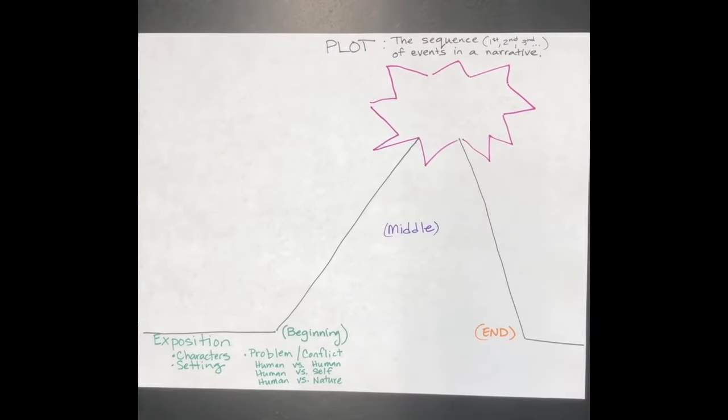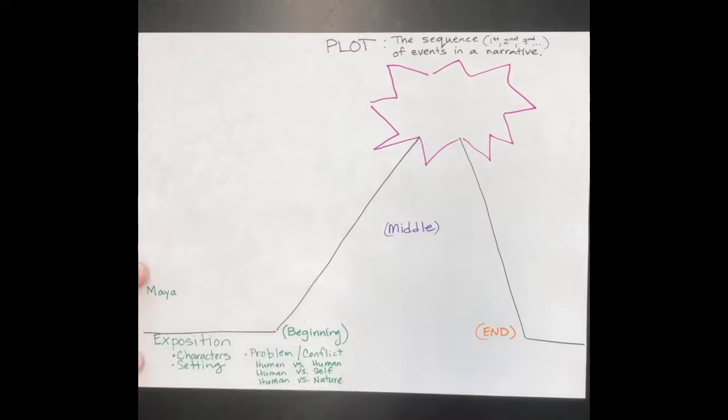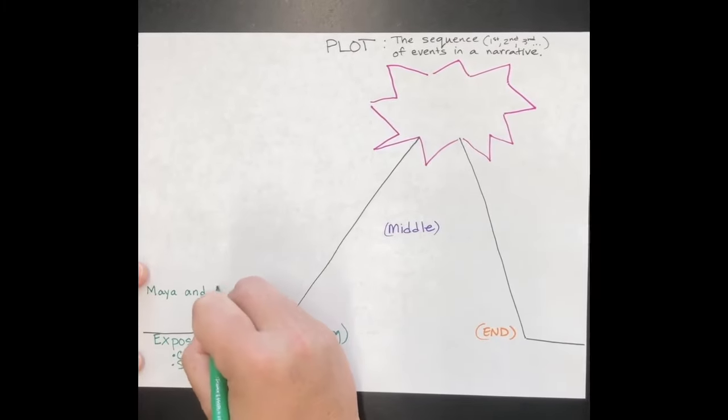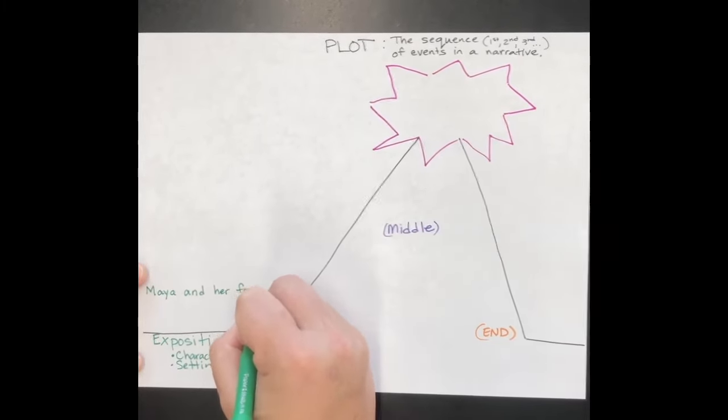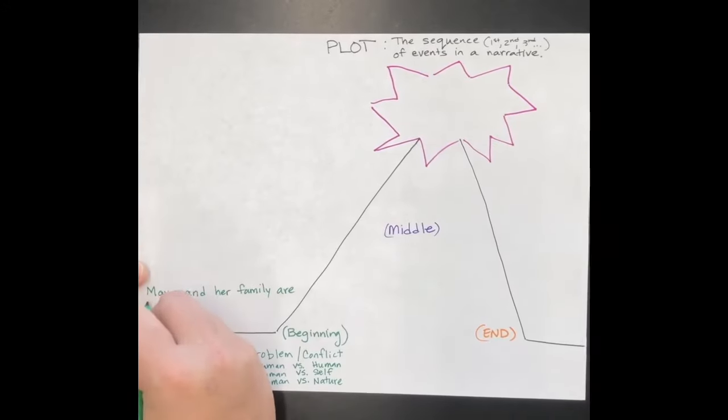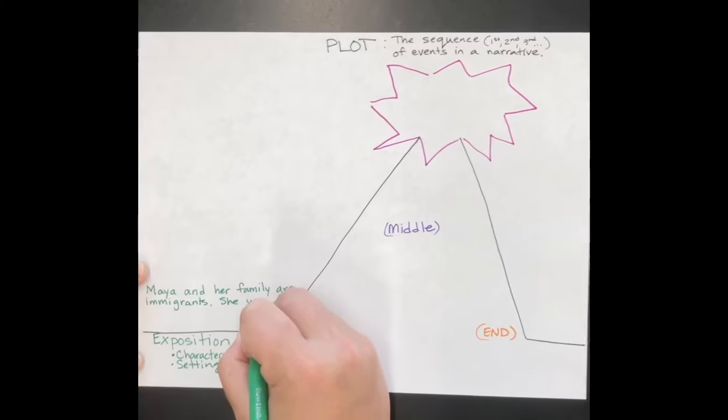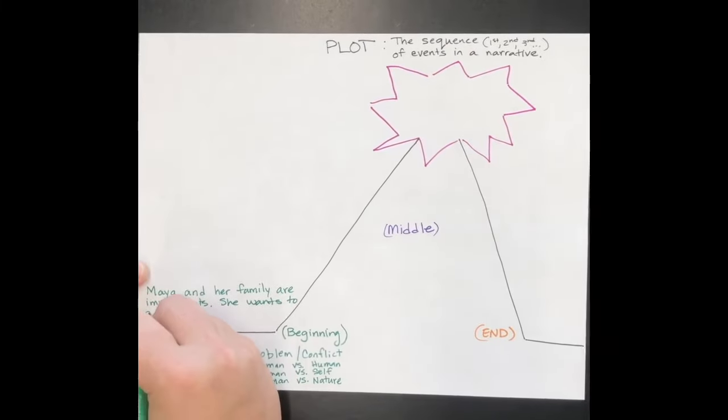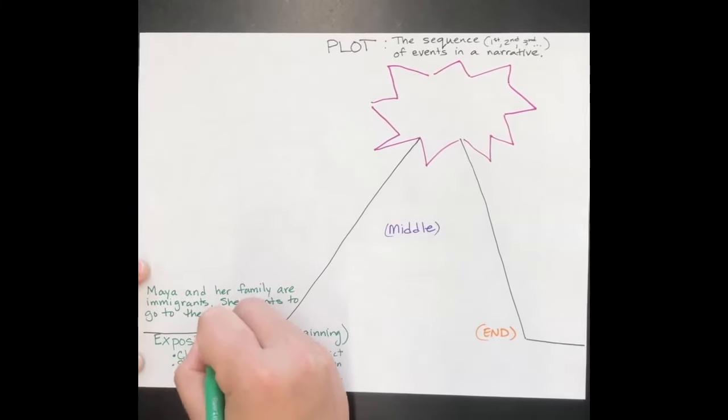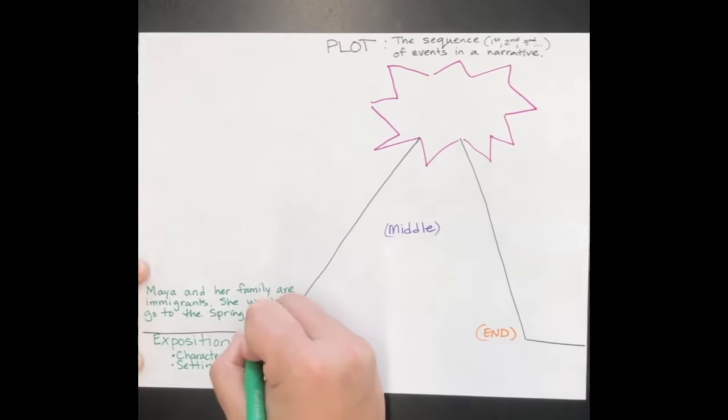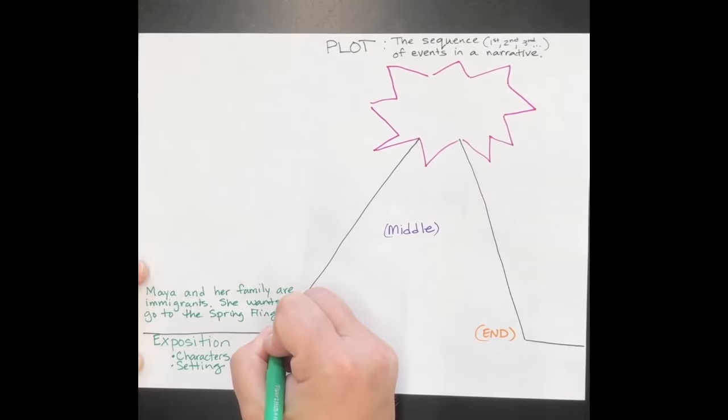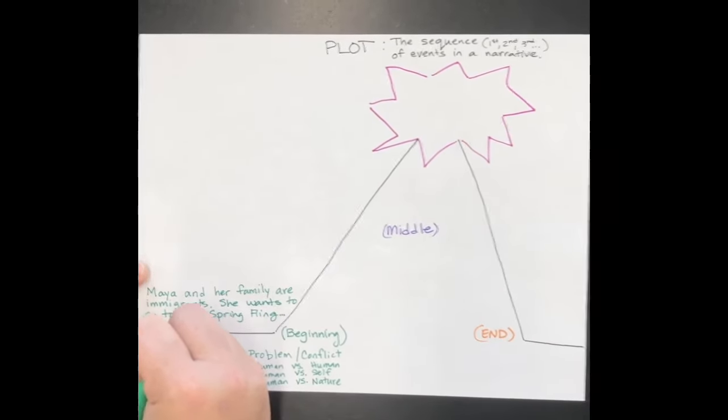In this story, Maya is battling against a cultural situation. It's her against the cultural norms she's been growing up with and what she wants to change into. Right in the exposition, Maya and her family are immigrants. She wants to go to the Spring Fling, but her parents are saying no. That is the conflict or problem in the story.